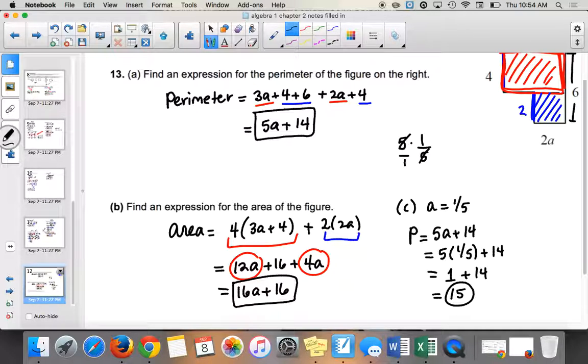So the perimeter, not so bad. We don't know the units, so that would just be like units to the first power. So like units.